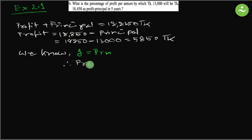So we can write, therefore PRN equals I, therefore rate of profit R equals I by PN.